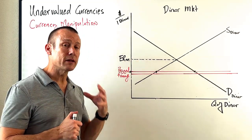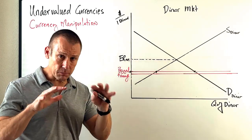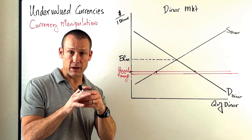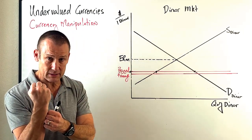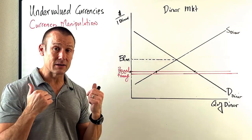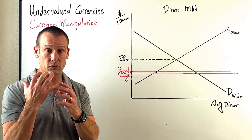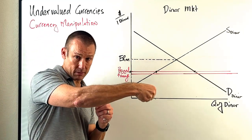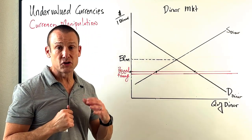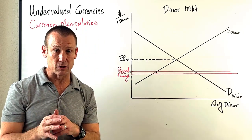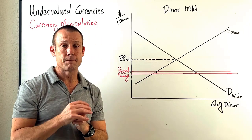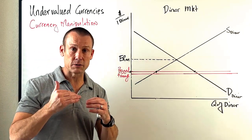So what is this country going to do about it? With an overvalued currency, we learned that a country takes its official reserve assets — dollars in this case, since the dinar is pegged to the dollar — supplies them to the currency market, and buys up its dinars, shifting the demand curve for dinars to the right. They draw down their reserve assets. With an undervalued currency, however, they're going to actually build up their reserve balances.